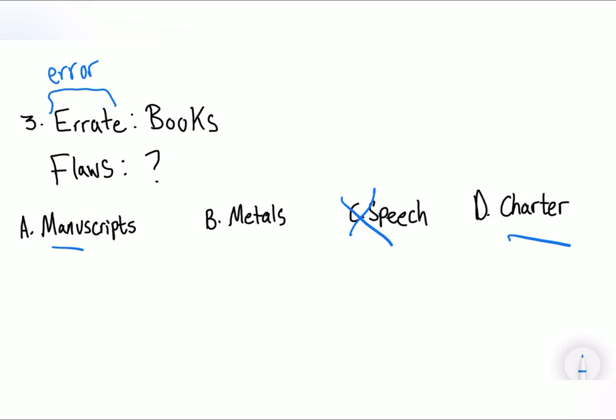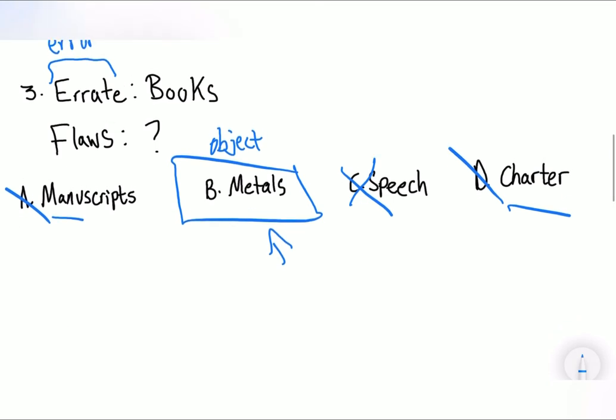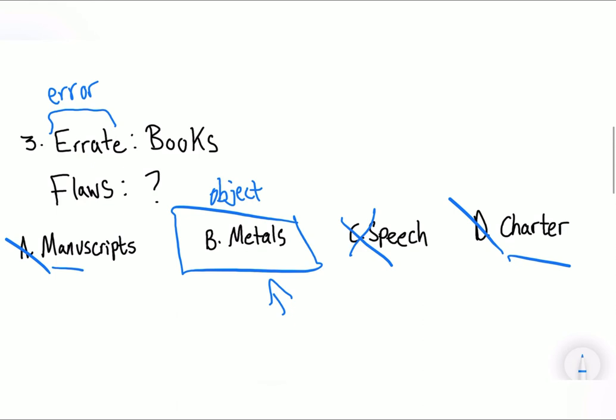And then we can look at the manuscript and charter. Manuscript and charters basically mean the same thing. And when they basically mean the same thing, you cannot have two answers. Meaning you can cancel these out because there are synonyms. Leaving us with metals. And metals is the answer. Why is metals the answer? Because metal is an object. And flaw, when you're looking for a flaw, you're looking for a flaw in an object. I know this question is actually pretty hard. So I would advise you to look into it and search the definitions if you don't know. And yeah, ask any questions in the comments.